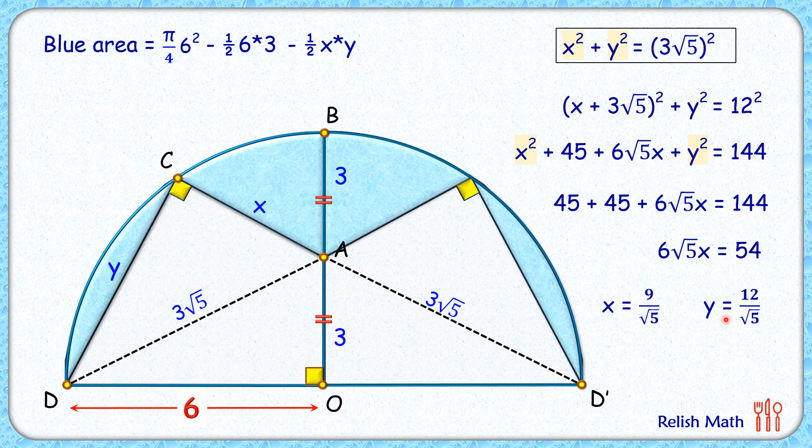Putting this value of x and y here in our original equation, replacing half xy as half of 9 root 5 times 12 root 5, simplifying it we will get our blue area as 8.46 cm square. And that's our answer.